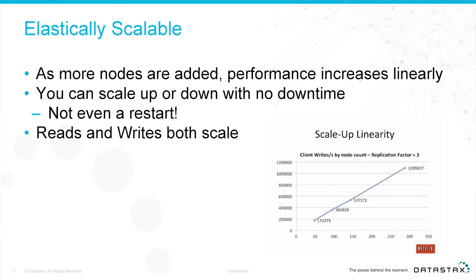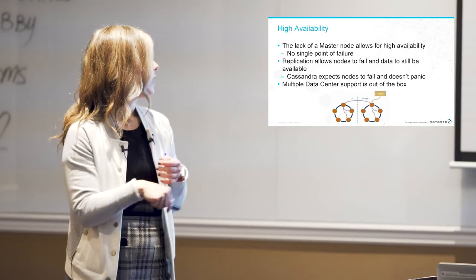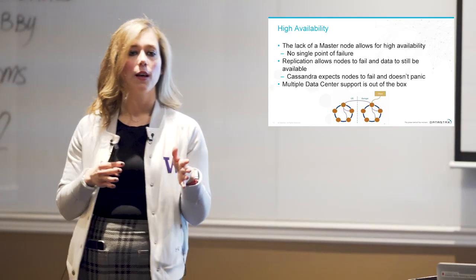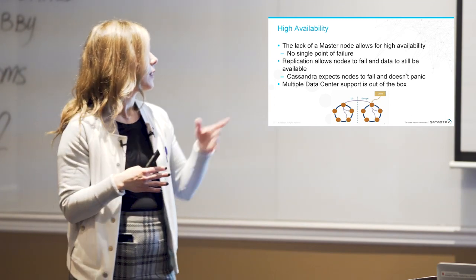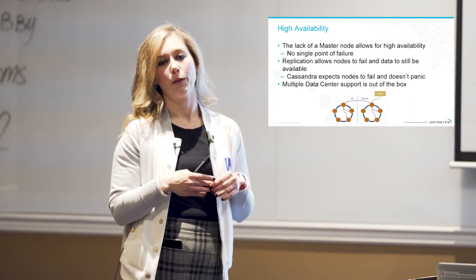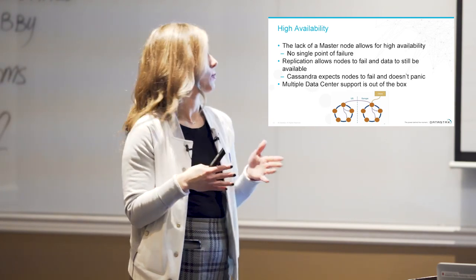For elastic scalability: as you add more nodes, performance increases linearly. You can scale up and down with no downtime — you don't even need a restart, which is pretty cool. Both reads and writes scale linearly. Netflix showed that as they added more nodes, they were able to handle more client writes. For high availability: the lack of a master node and no single point of failure means replication allows nodes to fail while data remains available.